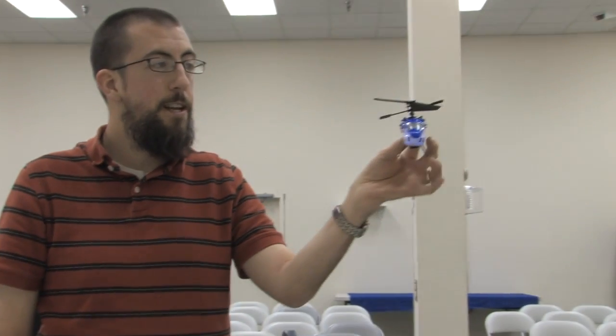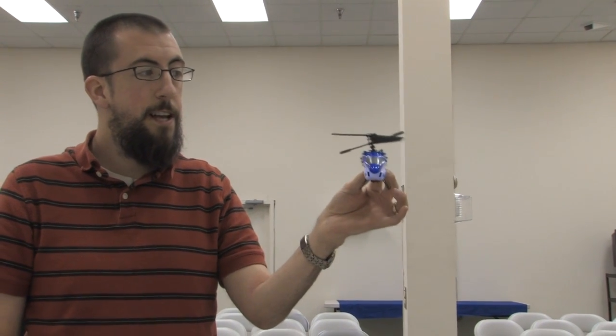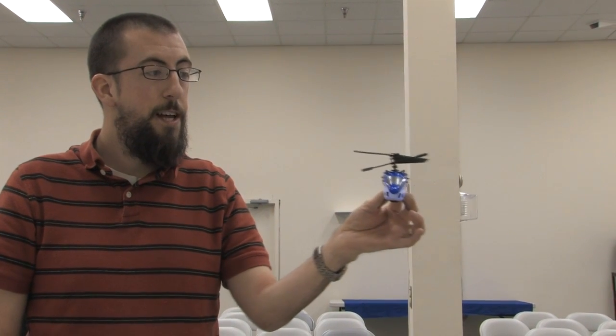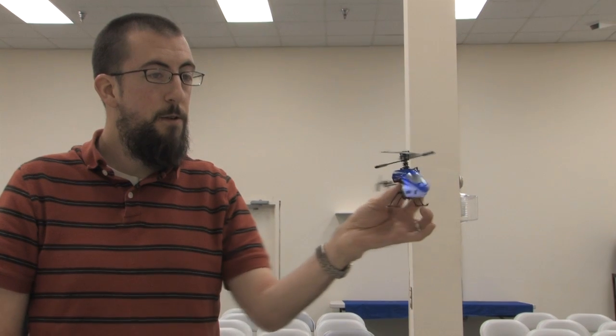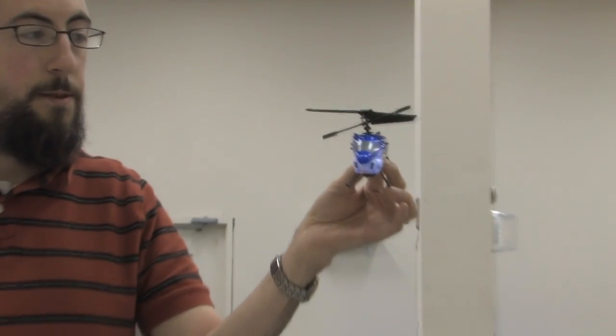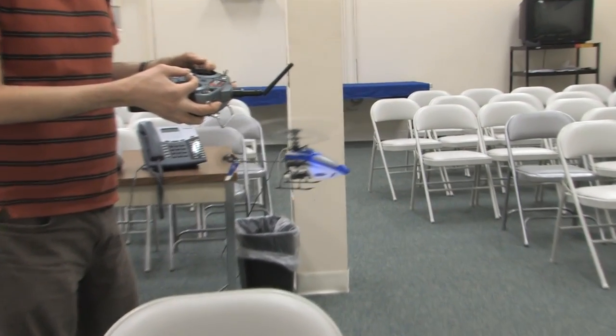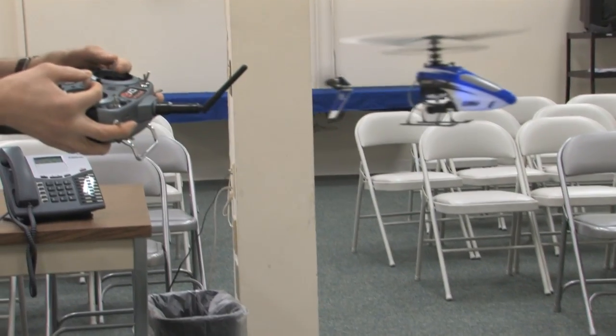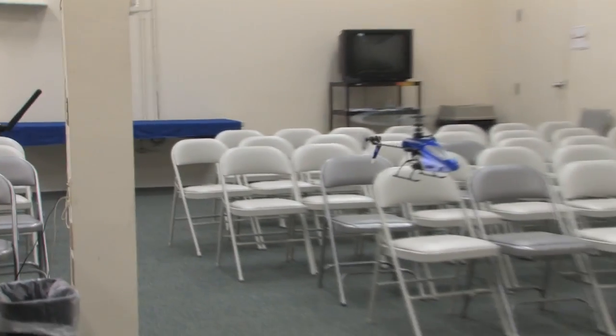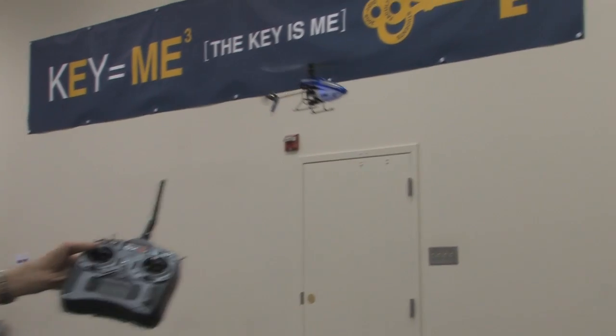When I'm flying this, when I'm hovering it, I'm constantly making adjustments to all of those things at once. I'm adjusting the cyclic to keep it in place, I'm holding the tail to make sure it doesn't rotate when I don't want it to, and I'm also controlling the throttle, finely adjusting it to keep it hovering in one spot. Now this one's stable enough that I can almost let go of the controller, and it'll just keep doing what it's doing.